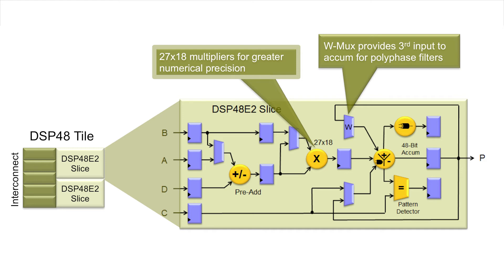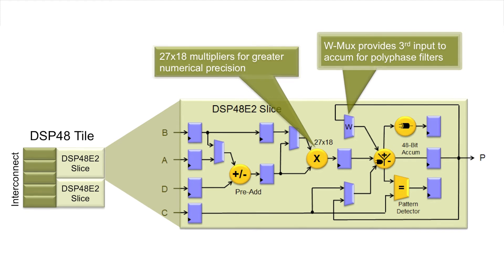It also allows for more efficient single and double precision floating-point operations. Another key enhancement of the DSP48E2 slice is the addition of a new feedback MUX called the W MUX that can be used to more efficiently implement commonly used DSP operations, such as complex arithmetic, polyphase filtering, and multiply-accumulate functions.